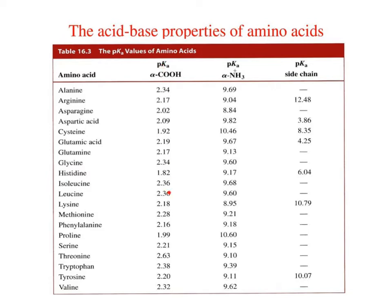What we have is a list of the amino acids, and we have three columns here. The pKa for the carboxylic acid, every amino acid has one of those. pKa for the alpha amino group, every amino acid has one of those. And the pKa for side chains. Notice there's only 7 of those that have pKa's.